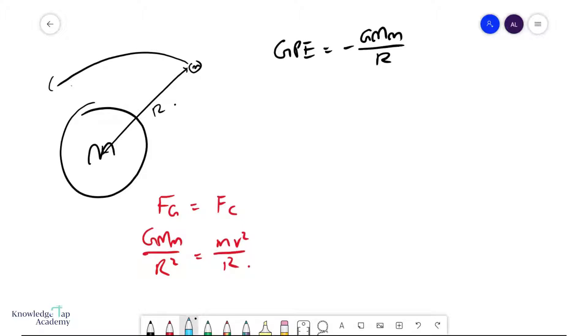And so what I'm going to do, first of all, I'm going to cancel away these r's, and I'm going to multiply half on both sides. And what you'll see is that this now becomes the expression for kinetic energy, half mv squared.